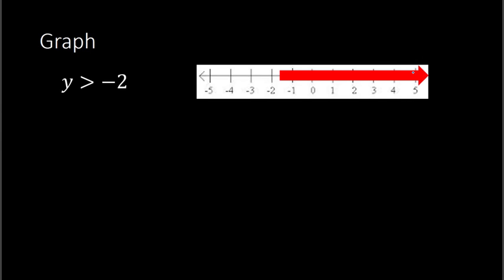Now the question is what happens right at negative 2. Well, negative 2 is not a solution, because if I plug that in for y, negative 2 is not greater than negative 2. It could be something super small above that — like negative 1.99999, something really close to negative 2 but not quite — that would still be a true statement. So the way to express this in math notation when graphing is to put an open circle around the negative 2, showing that negative 2 is not a solution. It's getting infinitely close to negative 2, but never actually equaling it. So this would be how I graphed this expression.